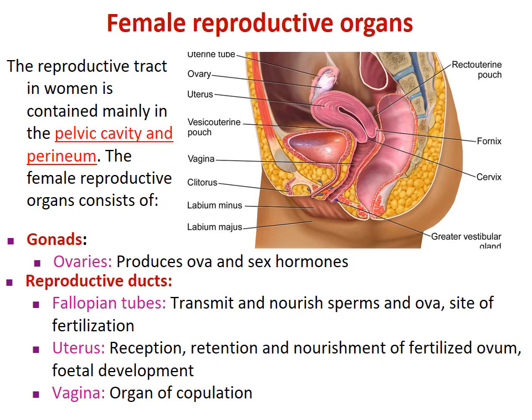The reproductive tract in women is contained within the pelvic cavity and perineum. The pelvic cavity is bounded by the two hip bones — right and left — and posteriorly by the sacrum. The right and left hip bones join and meet at the pubic bone to form the joint called the pubic symphysis. In the picture, there is a cut section of the pubic symphysis where the two pubic bones are uniting together in the sagittal section.